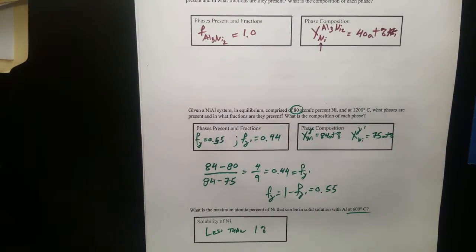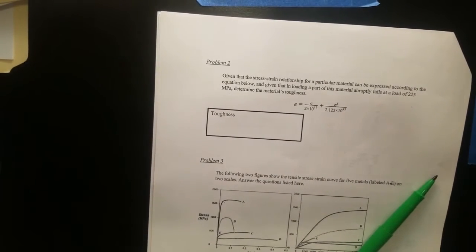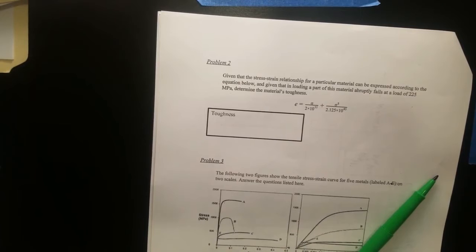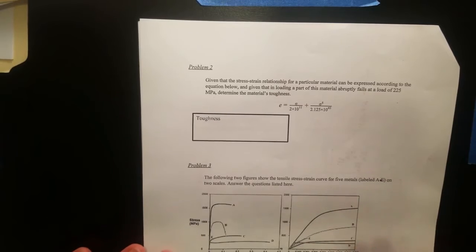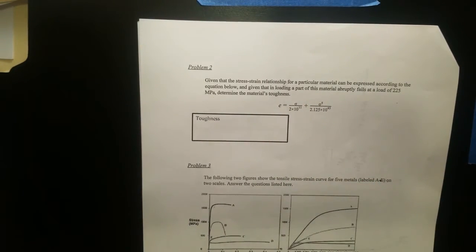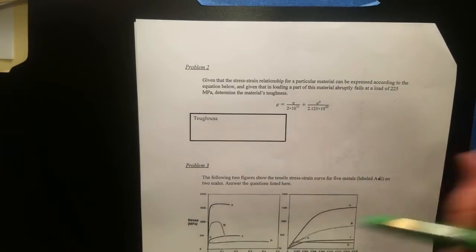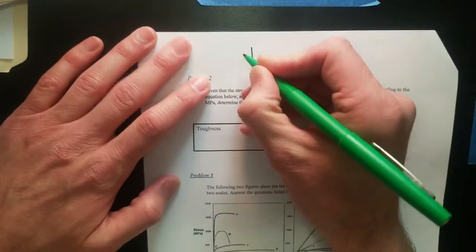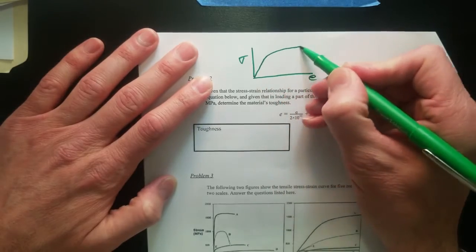That's the solution to problem one. Now let's get problems two and three. Problem two, this is one of those integral problems. You've seen this on quiz number two, and I had a video showing how to solve this. We're talking about the toughness. In stress-strain terms, we've got something that looks like this.